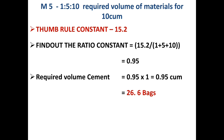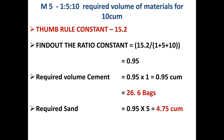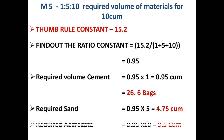Similarly, you can find the required sand or fine aggregate. Take the ratio constant 0.95 and multiply by the fine aggregate ratio, which is 5. So 0.95 × 5 = 4.75 cubic meters of fine aggregate (sand) is required.